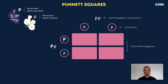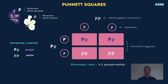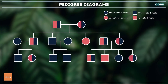When a heterozygous purple-flowered plant is crossed with a homozygous white flower plant, the possible combinations of alleles in the resulting offspring are Pp and pp. This means that 50% of the flowers in the first generation will be purple, and 50% will be white.